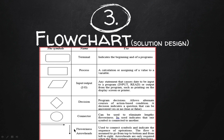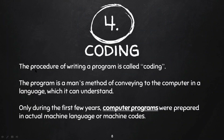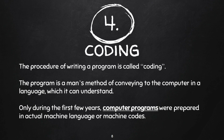Next is coding. The procedure of writing a program is called coding. In any programming language, if you write the code, that is called coding. A program is a method of conveying to the computer in a language which it can understand. The program is simply a human's way to request the computer to do something — the program which we are writing, only we can understand.